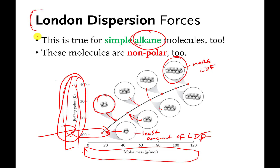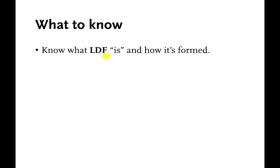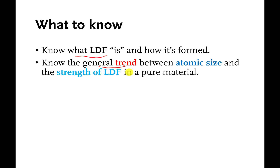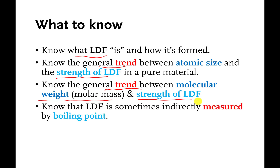What you should know: you should know what London dispersion forces are and how they are formed. You should know the general trend — bigger molecule means stronger London dispersion forces. The heavier or bigger the molecule, the stronger the London dispersion forces. You should also know that London dispersion forces are very often measured by measuring boiling points. Higher boiling point means more London dispersion forces because it means it's harder to boil something away.